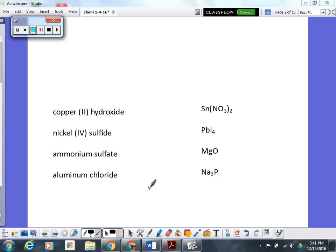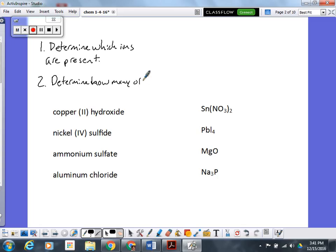So first of all, if you start with the name and you want to write a formula, the two things you need to do are: first, you need to determine which ions are present, and that includes the charge, not just the symbol. The second thing you need to do is determine how many of each ion you need to make a neutral compound.